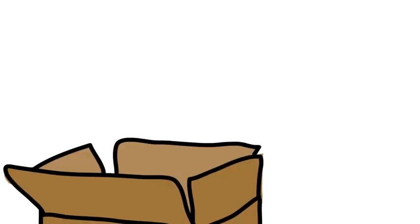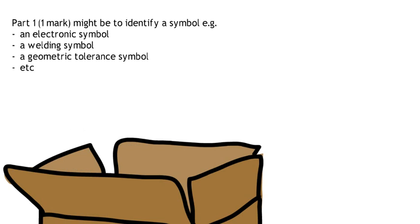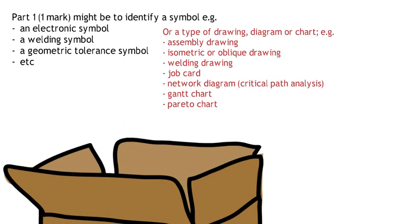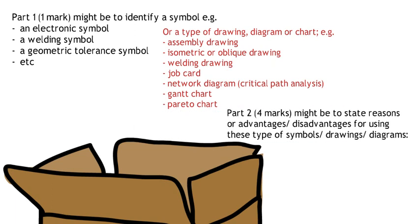A question might have a part one, which might be to identify a symbol — any type of symbol — or identify a diagram, a drawing: a Gantt chart, Pareto, or Job Card. And for part two, you might have advantages, disadvantages, and so on.